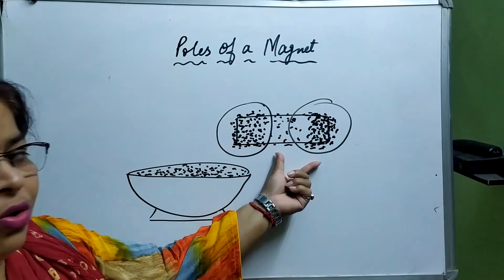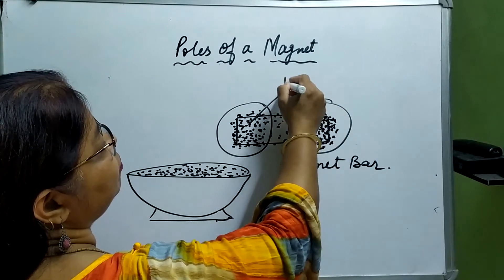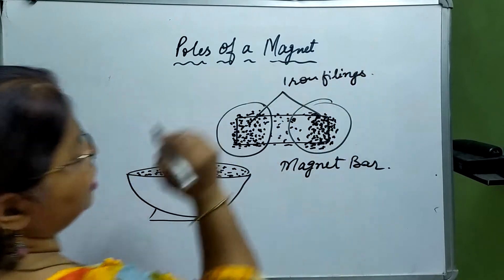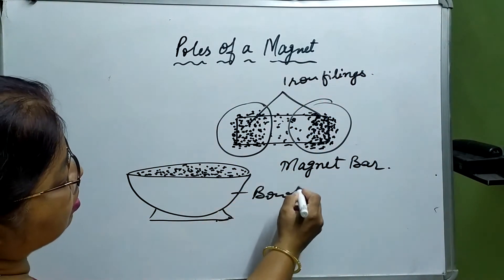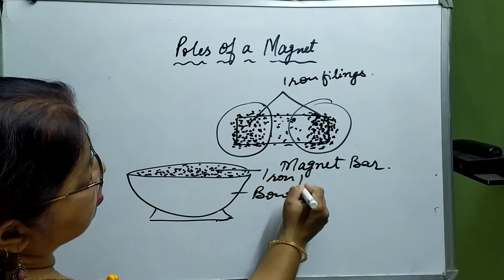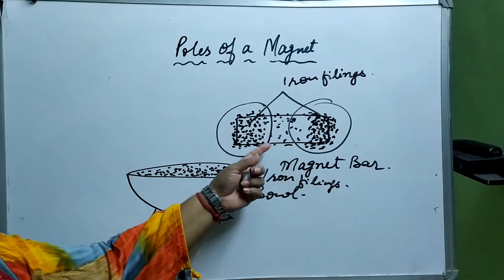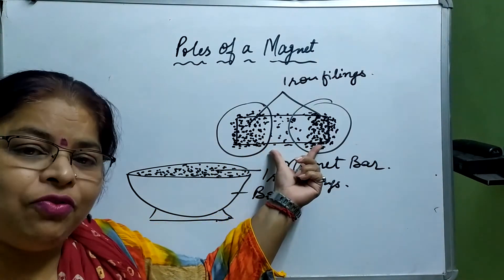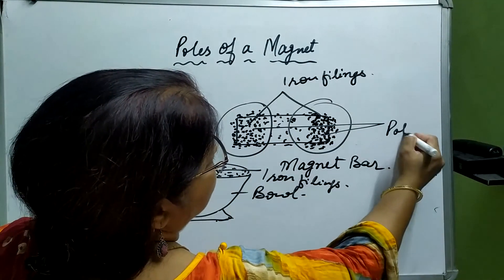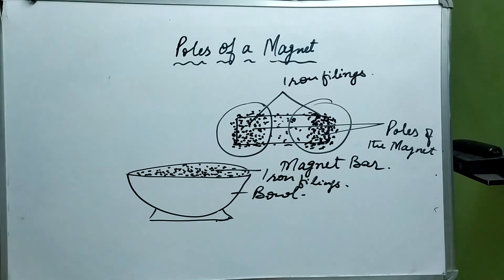So these regions where most of the Iron Filings are sticking — this is the Bar Magnet kept in a bowl of Iron Filings. The conclusion of this activity is that the regions of the Magnet where most of the Iron Filings are sticking, these particular parts are known as Poles of the Magnet.